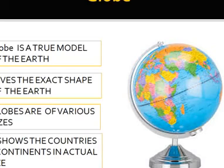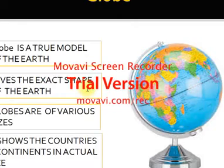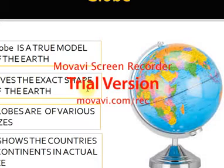What definitions have been given about the globe? The globe is always called the model of the Earth, a true model of the Earth. That is why the globe is also called the model.